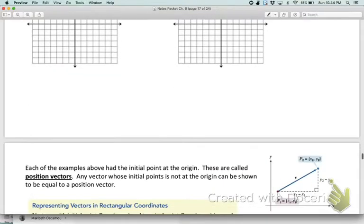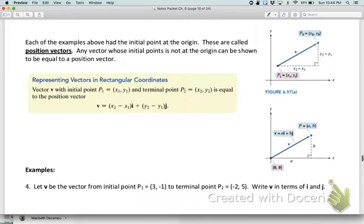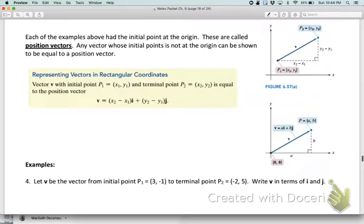Now let's look at some operations that we can do in the coordinate plane that helps us locate vectors. Each of these points had an initial point at the origin, and so anytime you have that, that's called a position vector. Any vector whose initial point is not at the origin can be shown to be equal to a position vector.